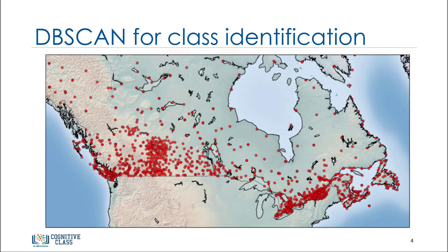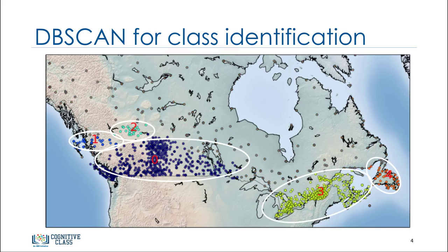DBSCAN is particularly effective for tasks like class identification on a spatial context. The wonderful attribute of the DBSCAN algorithm is that it can find out any arbitrary shaped cluster without getting affected by noise. For example, this map shows the location of weather stations in Canada. DBSCAN can be used here to find the group of stations which show the same weather condition.